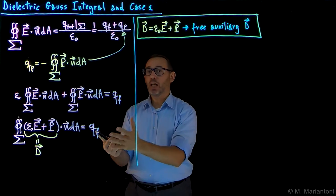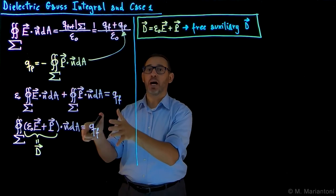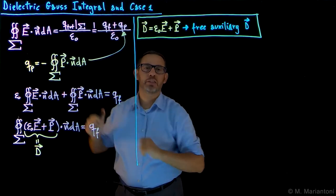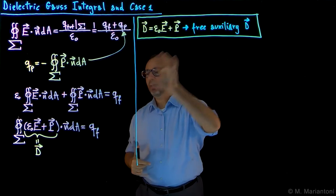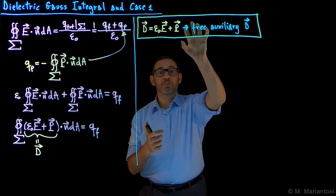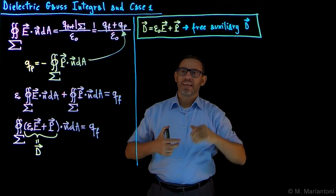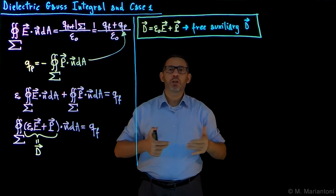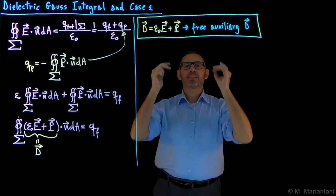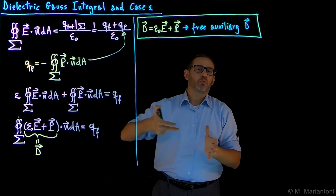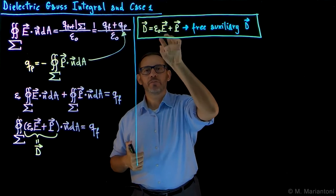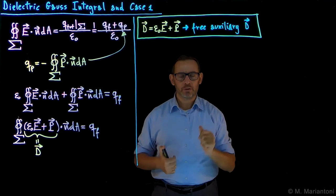Why 'free'? Because D relies only on Qf. Why 'auxiliary'? It is an auxiliary field — you do not really necessarily need it. The fundamental field in electromagnetism for the electric part is E, the electric field vector; E is the fundamental field in electromagnetism.